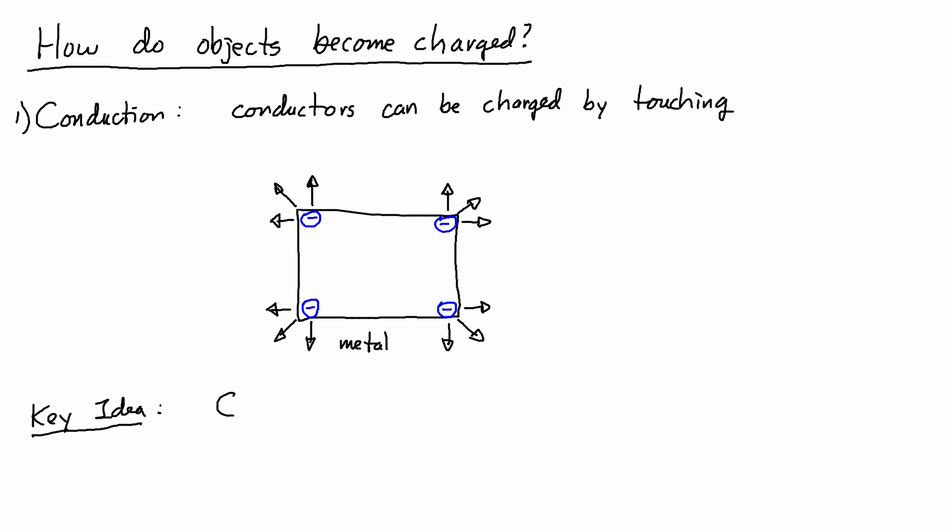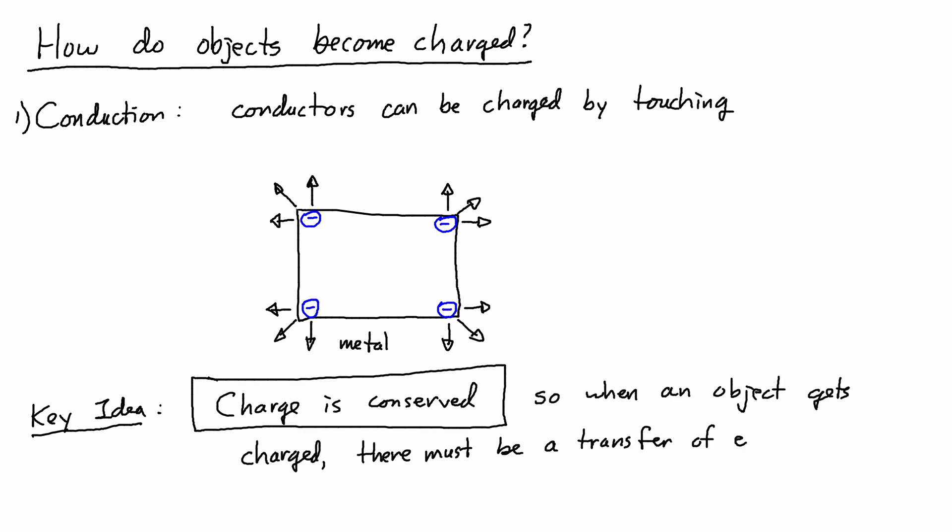Another key idea is that charge is conserved. When an object gets charged, there must be a transfer of electrons. Another way that objects can get charged is by rubbing. Insulators work best for this.